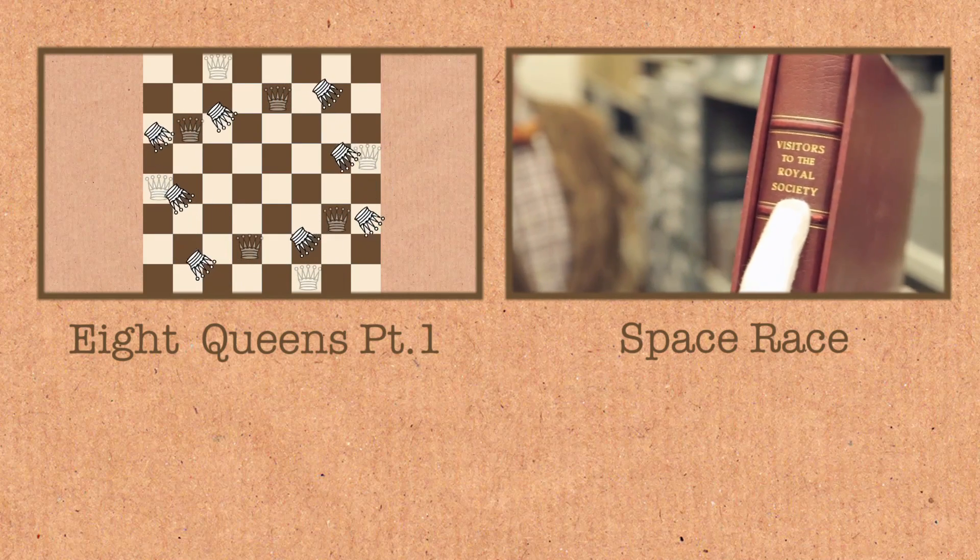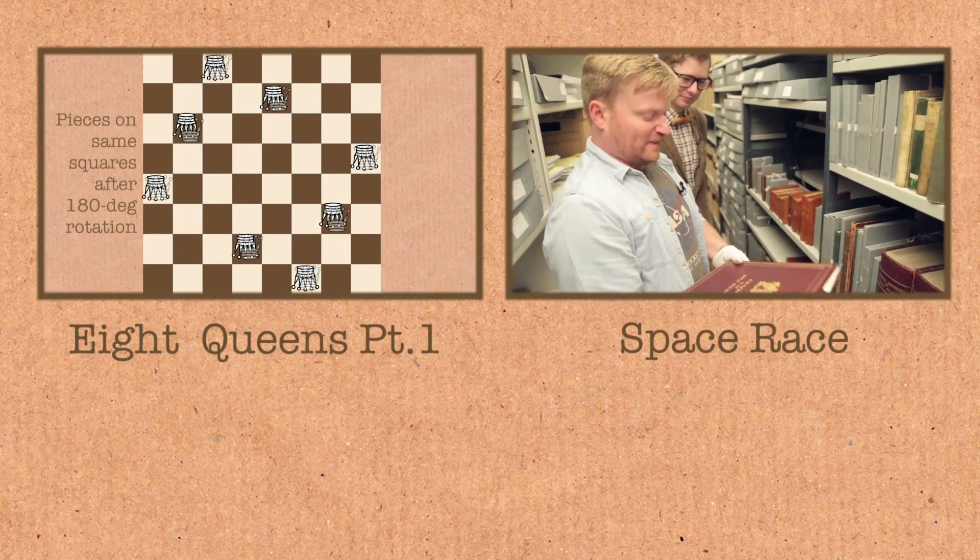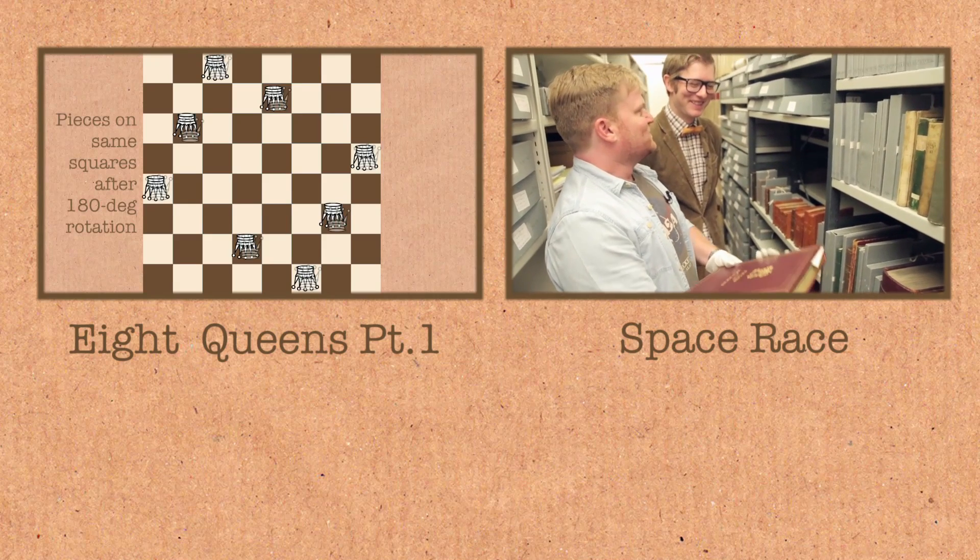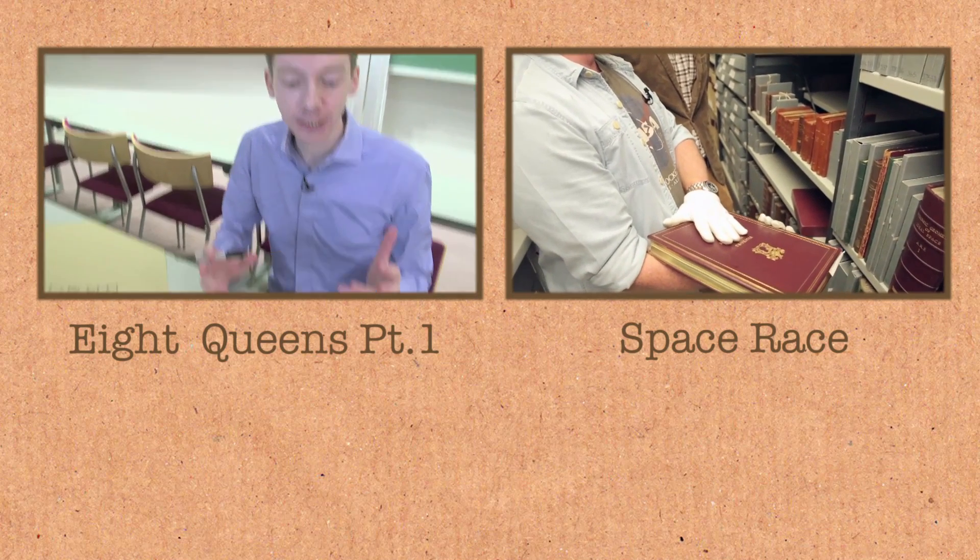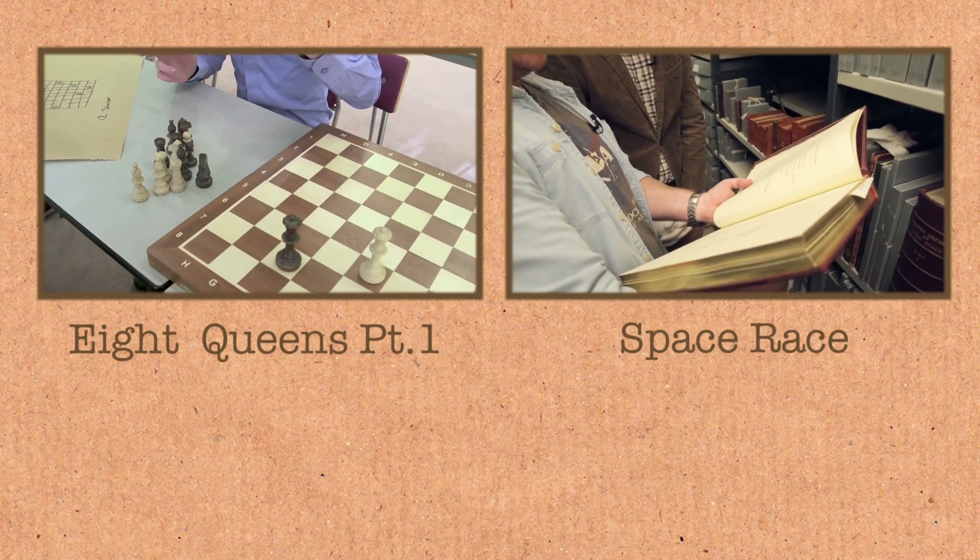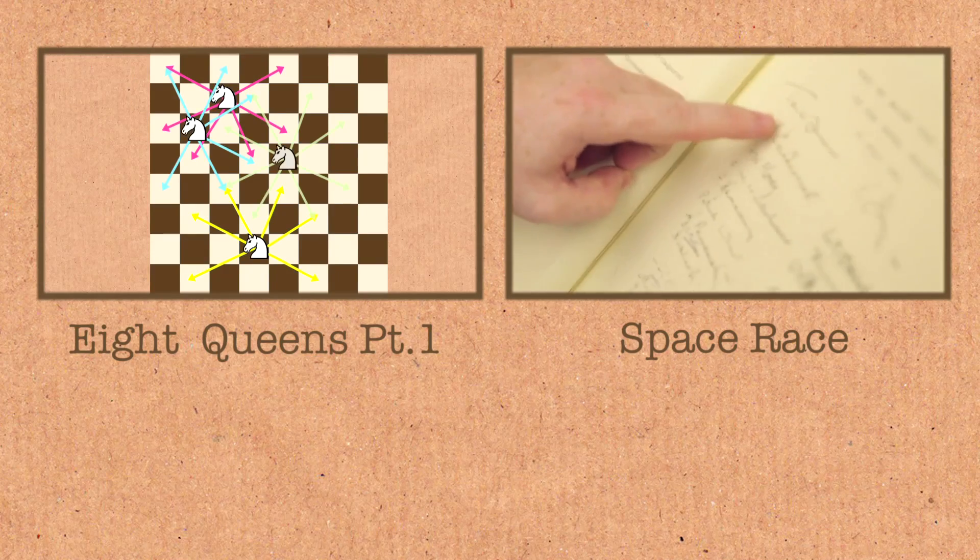We have visitors to the Royal Society. We think they actually had this book specially made. Because Yuri Gagarin came to the Royal Society, they thought, wow, we're going to need a better visitors book. The Visit of Major Yuri Gagarin to the Royal Society, 13 July 1961.